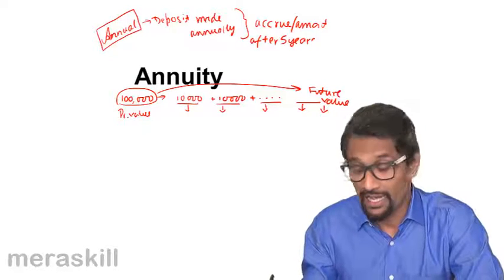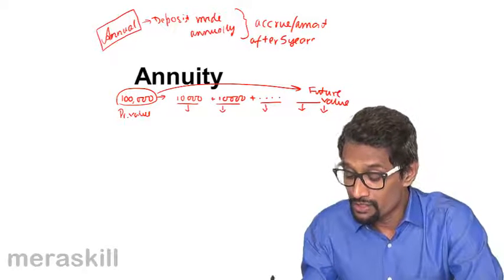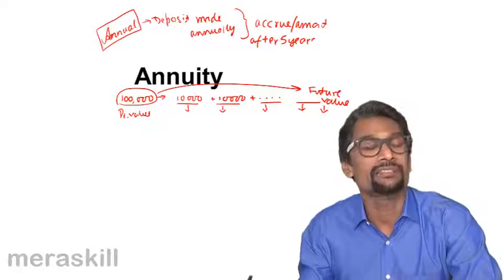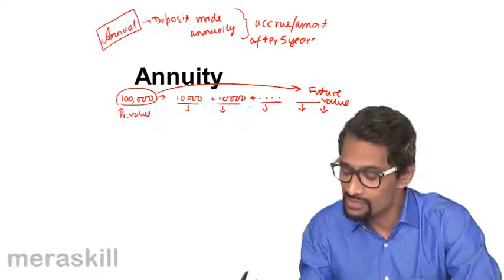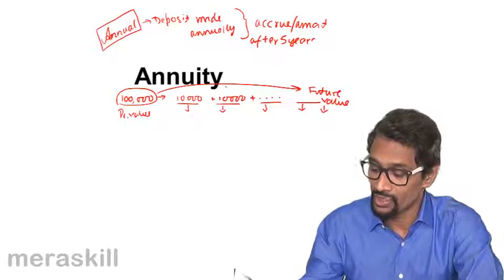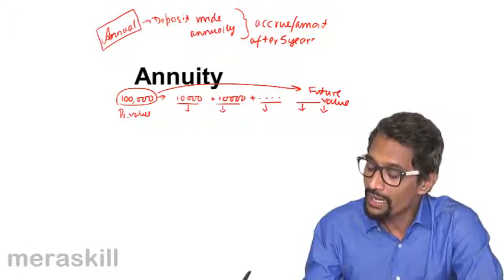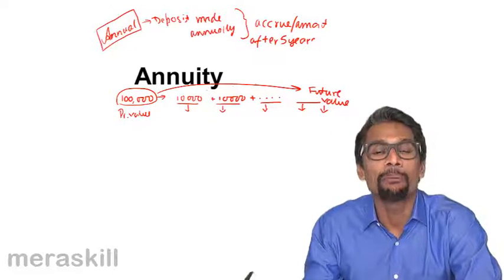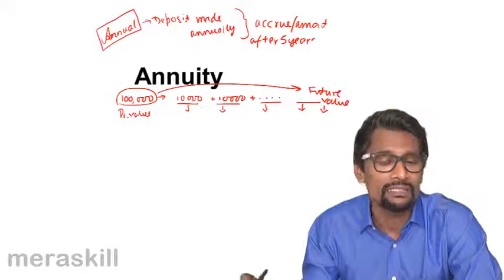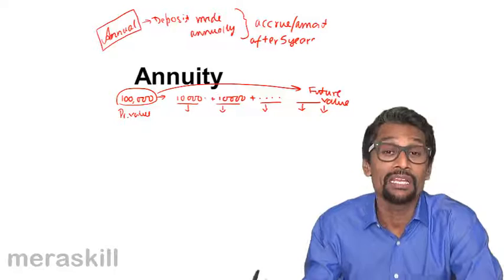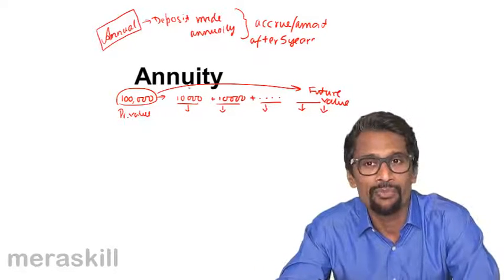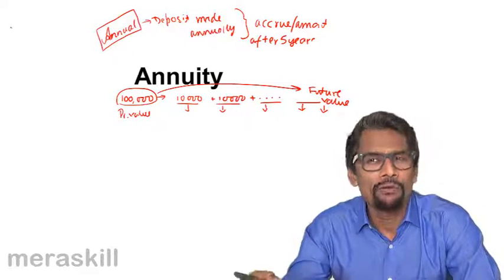It will be much less than this. Hence, if you need to repay 1,00,000, you have to pay more than 10,000 with every installment so that it amounts to 1,00,000. In all these, you have the concept of an annual payment made at the end of every year, or in certain cases, even at the beginning of a particular year — we call that advanced annuity.